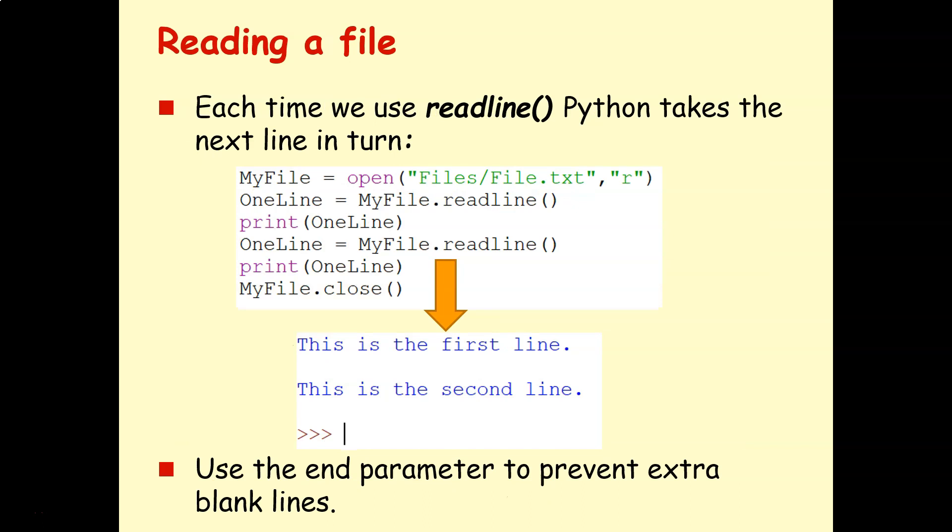Each time we use read line, Python takes the next line in turn. It kind of remembers where you were and it always takes the next line. So if you use dot read line twice, it won't just take the first line twice. It'll take the first line and the second line. So you can see that in this example here. I take one line here using dot read line. I print it. I then take the next line using read line. And then I print it again. But this time, first of all, I get the first line. And then the next time I use the print, I get the second line because it kind of remembers where it is and takes the next line each time. Again, if you want to not have these empty blank lines at the end, just use the end parameter like we did in the earlier example.